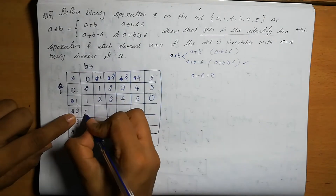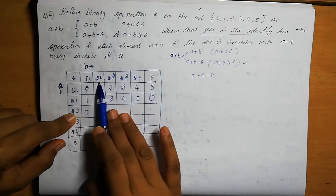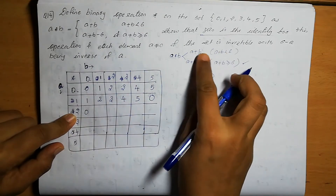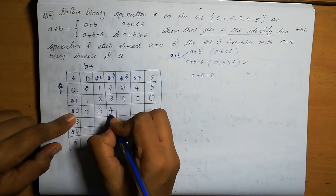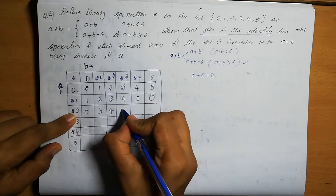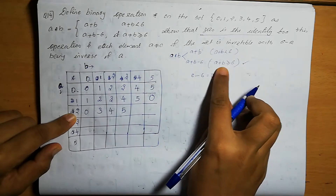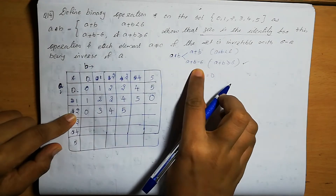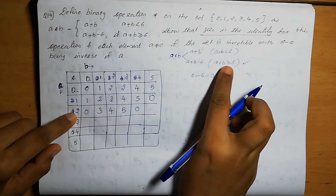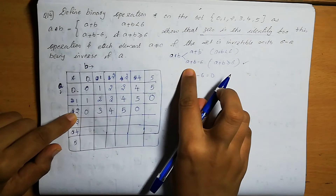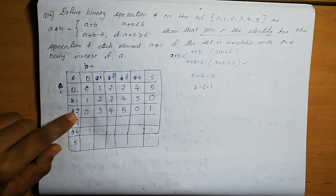Row 3: 3+0=3, 3+1=4, 3+2=5. For 3+3=6, we write A plus B minus 6 equals 0. For 3+4=7, we write 7 minus 6 equals 1. For 3+5=8, we write 8 minus 6 equals 2.